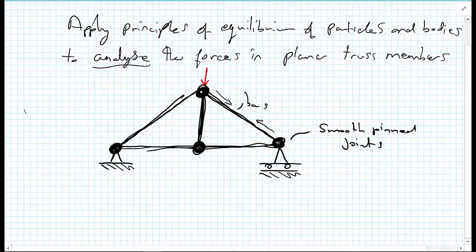We're going to assume that all of the loading on the structure, like the load that I've already applied in red, is only going to be applied at the joints. We're going to neglect, for now, the self-weight. We could, in future problems, assume that the self-weight of the bars goes 50% to one joint and 50% to the other joint. But for most problems, we're going to consider we're just going to neglect the self-weight of the bars themselves.